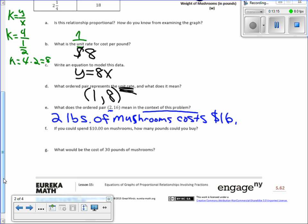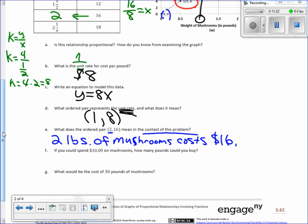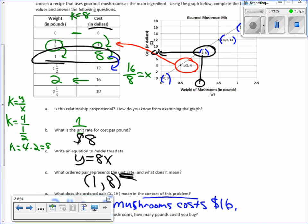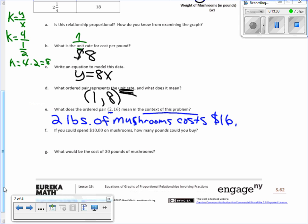F: If you could spend ten dollars on mushrooms, how many pounds could you buy? That's easy. I could either go back up to my table and look to see if that's on there. Is ten dollars there? Cost in dollars? No, it skips eight to twelve. So what can I do? Well, I write the equation: y equals kx. That's eight. Y is dollars, x is pounds. I know y is ten, so now I say ten equals eight x. Solve for x: divide by eight, divide by eight. The eights cancel, and I get x equals ten eighths or five fourths, which equals one and a quarter pounds.